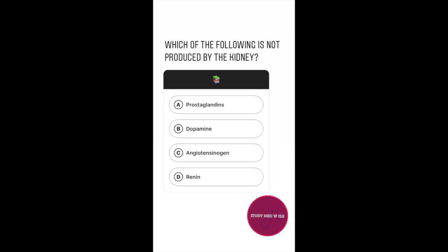Question number six. Which of the following is not produced by the kidney? Option A: Prostaglandins. Option B: Dopamine. Option C: Angiotensinogen. Option D: Renin.